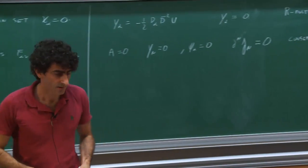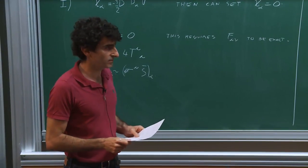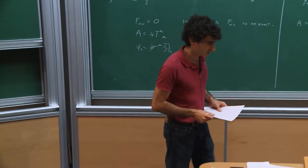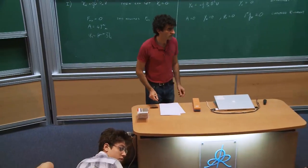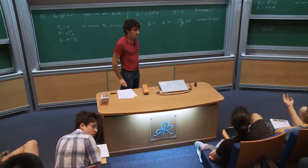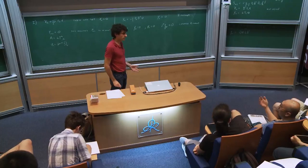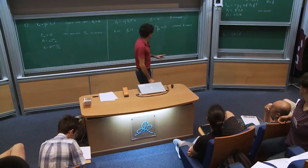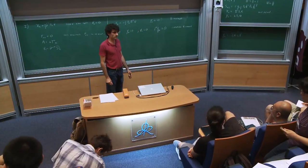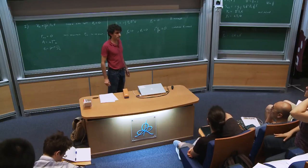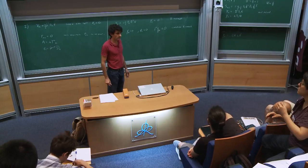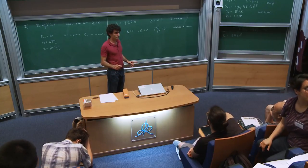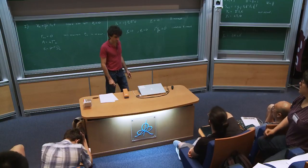I will say more about the FZ multiplet and R-multiplet in the next lecture. For instance, in the non-linear sigma model series, the R-current always suffers from an anomaly. If you have an anomalous R-current, the theory does not have an R-multiplet. Pure super-Yang-Mills has an anomalous R-current, therefore it has no R-multiplet — it turns out it has an FZ multiplet, and indeed it has domain walls but no supersymmetric strings.